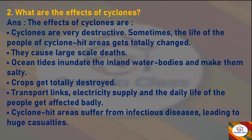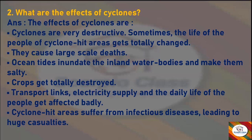The effects of cyclones are: cyclones are very destructive; sometimes the life of the people in cyclone-hit areas gets totally changed. They cause large-scale deaths. Ocean tides inundate the inland water bodies and make them salty. Crops get totally destroyed. Transport links, electricity supply, and the daily life of the people get affected badly. Cyclone-hit areas suffer from infectious diseases leading to huge casualties.